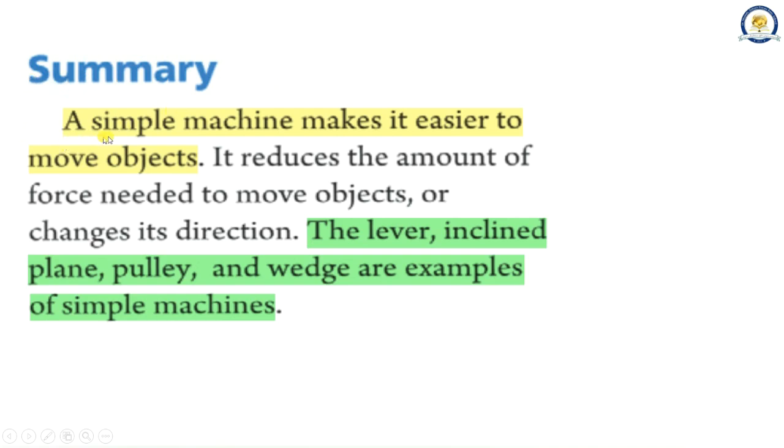Summary. A simple machine makes it easier to move objects. It reduces the amount of force needed to move objects or changes its direction. The lever, inclined plane, pulley and wedge are examples of simple machines.